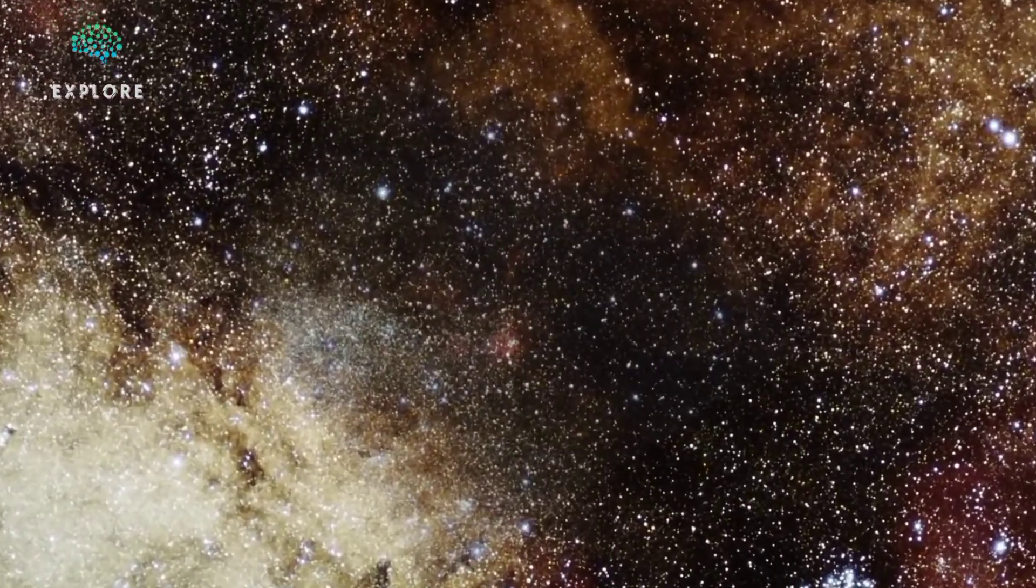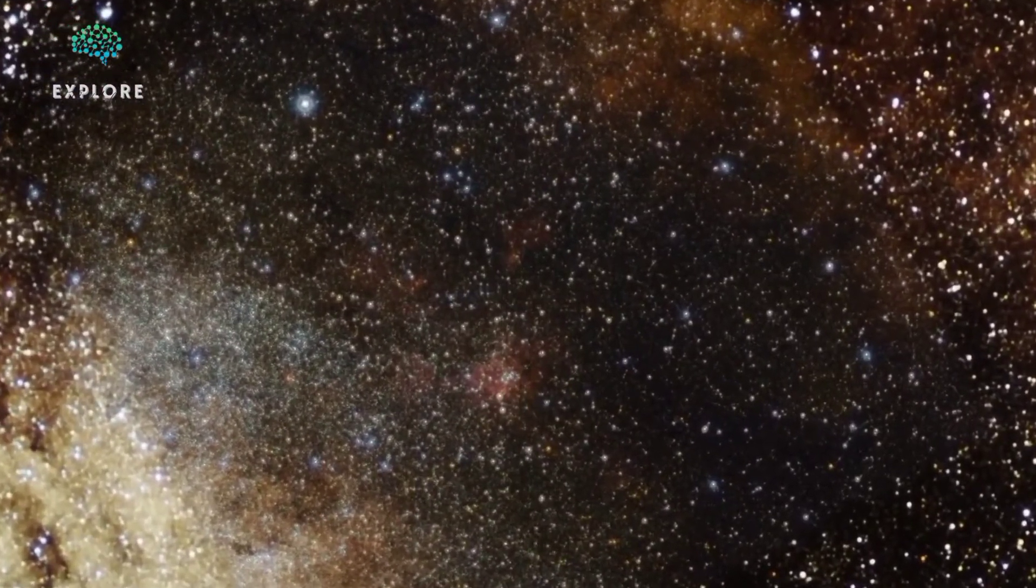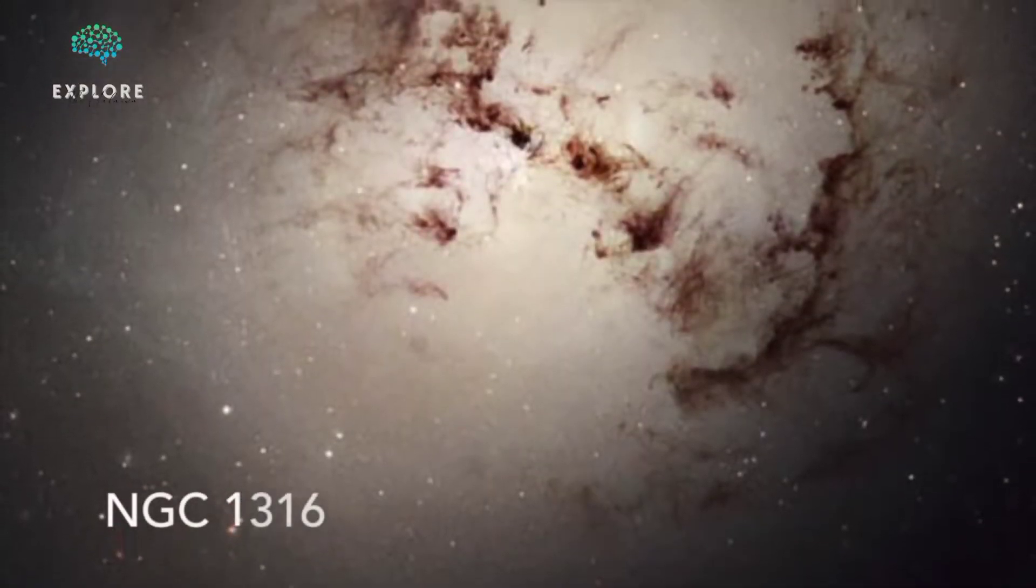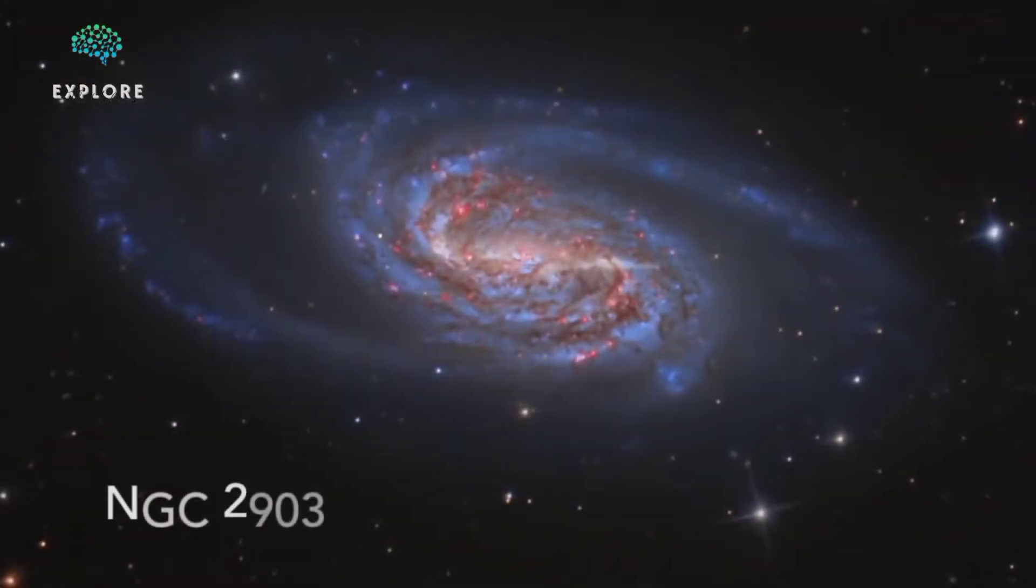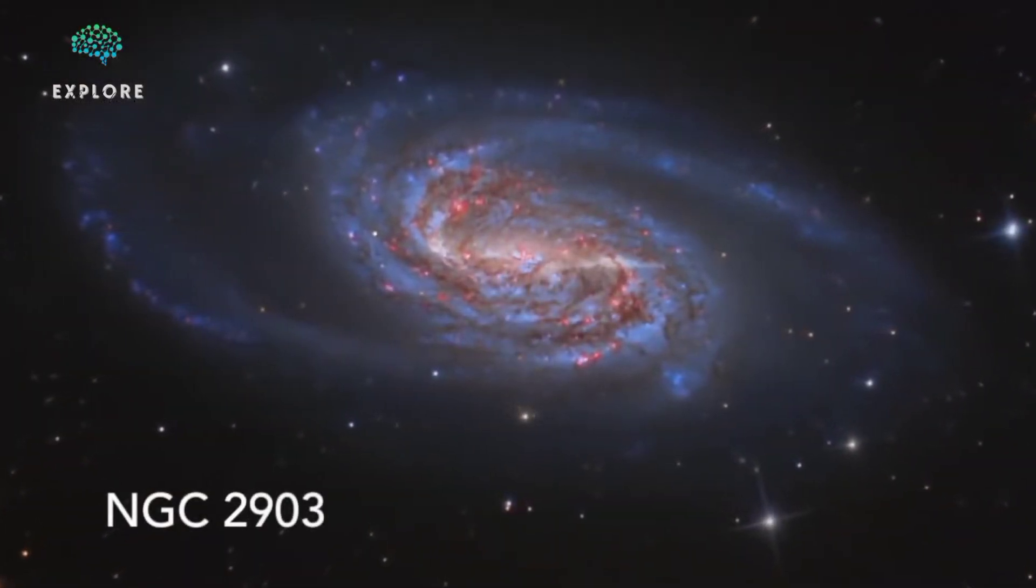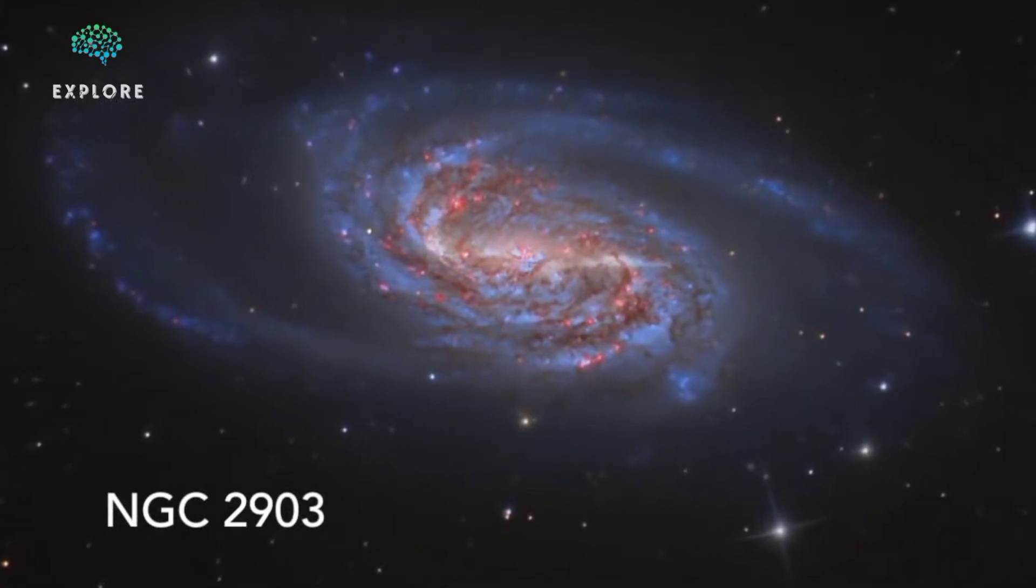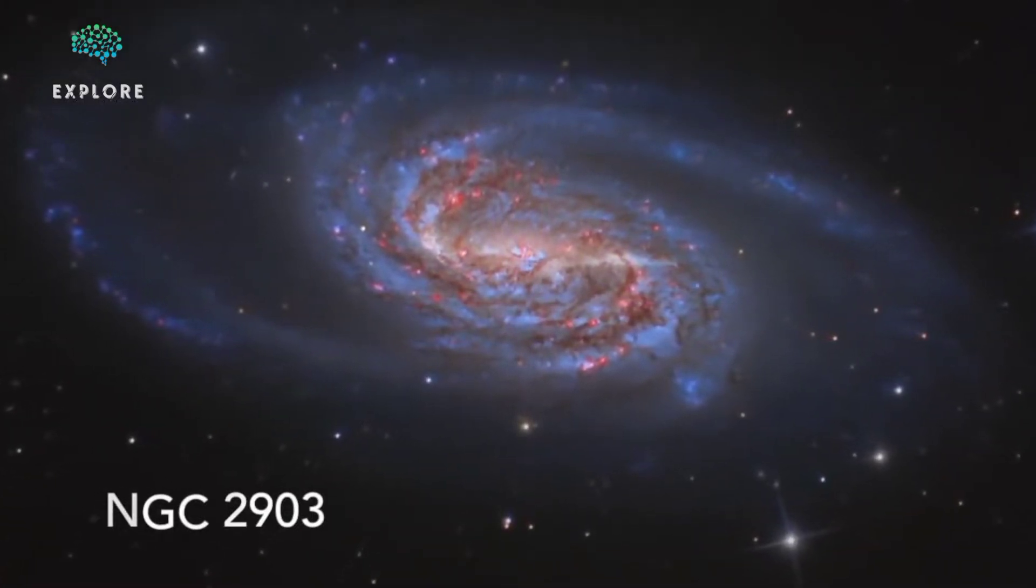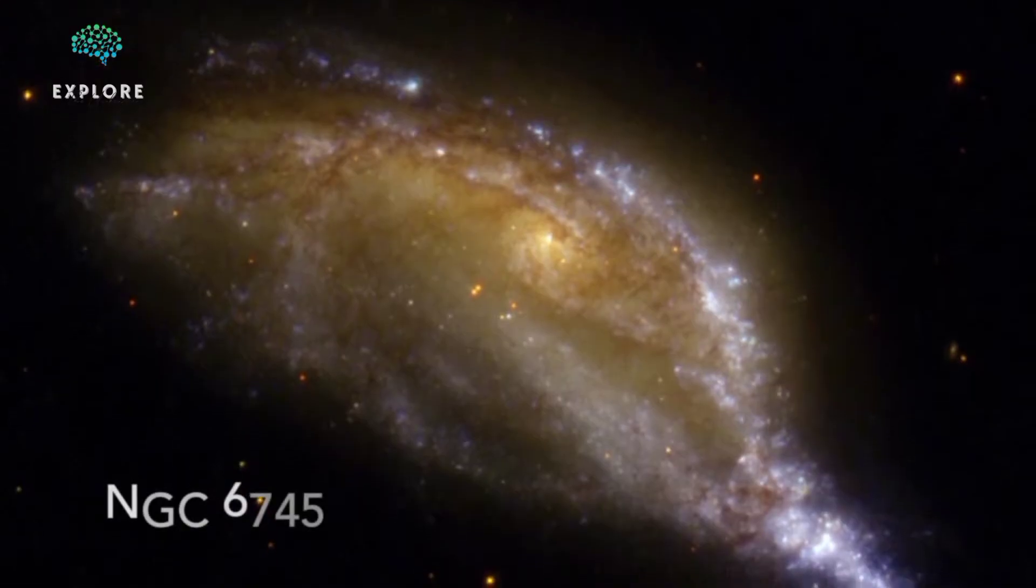There are three main types of galaxy, classified according to their shape: elliptical, which are oval-shaped; spiral, which have arms spiraling outwards from a central bulge, including those whose arms spiral from a bar-shaped bulge; and irregular, which have no obvious shape.